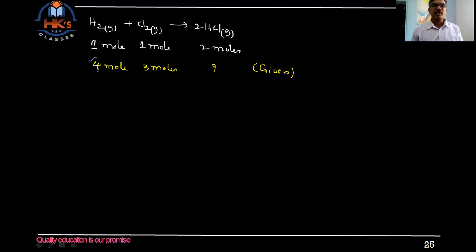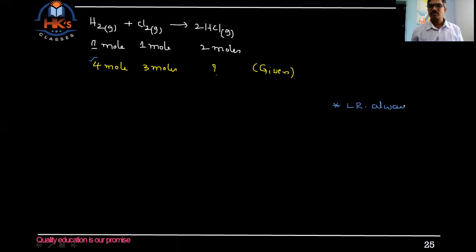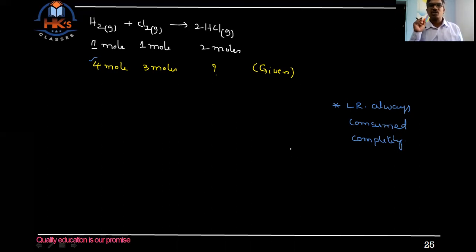The limiting reagent is the one that is completely consumed in the reaction — that is the limiting reagent. It will be consumed completely, and the one which remains after the reaction is generally called the excess reagent. All stoichiometric calculations must be done with respect to the limiting reagent only.